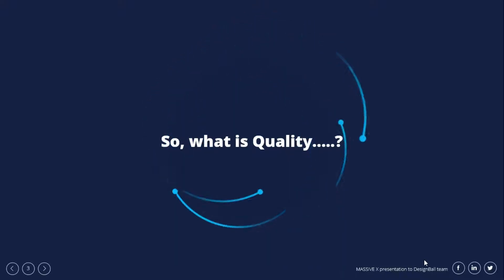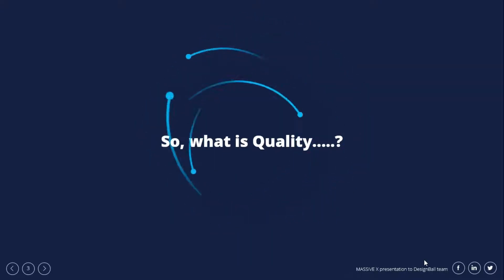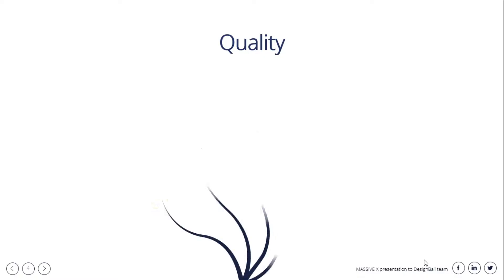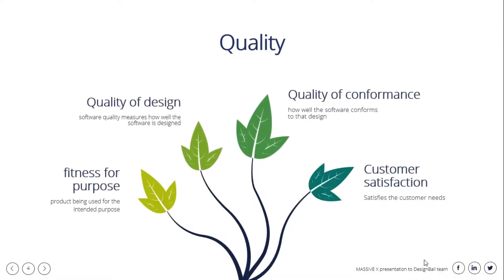In simple meaning, quality is a judgment of how excellent something or someone is. An example of quality is a product that won't break easily. Officially, quality means fitness for purpose — the product being used for its intended purpose. It also means quality of design, measuring how well software is designed, and quality of conformance — how well the software conforms to that design — as well as customer satisfaction.